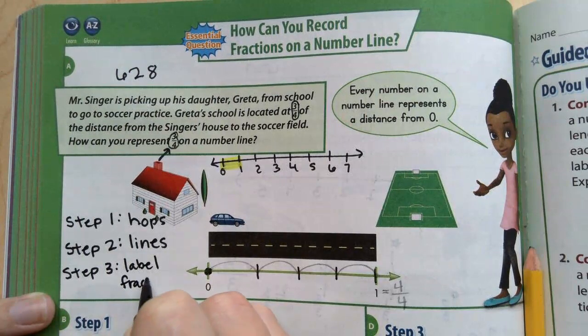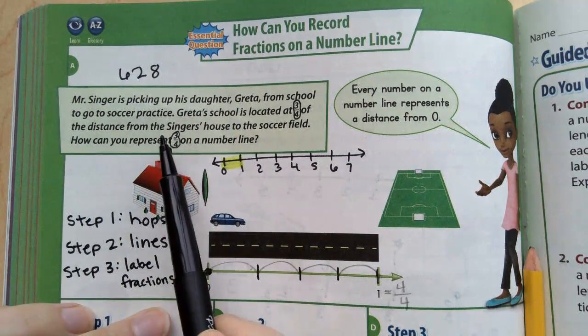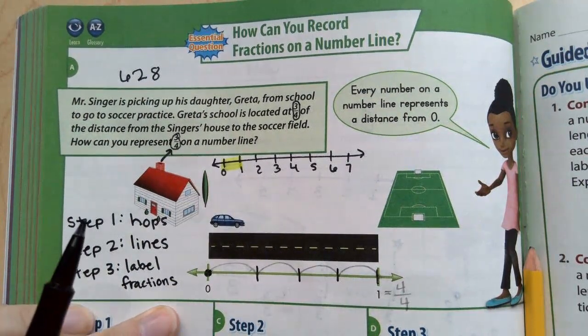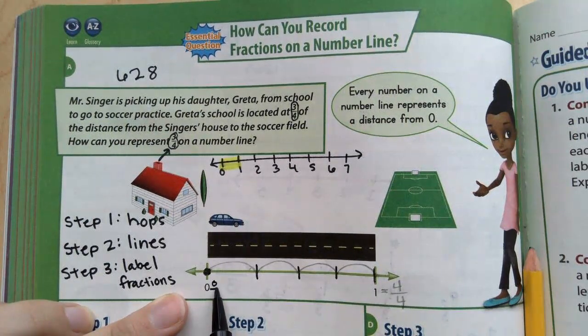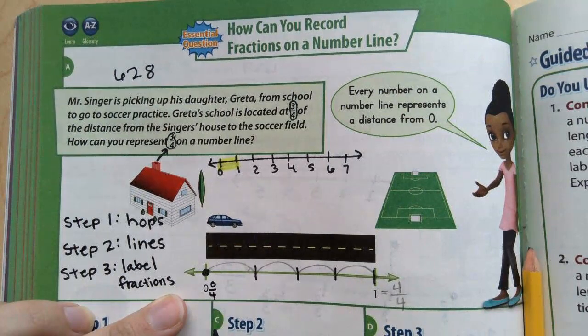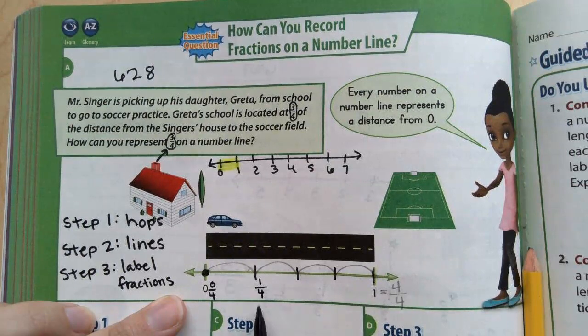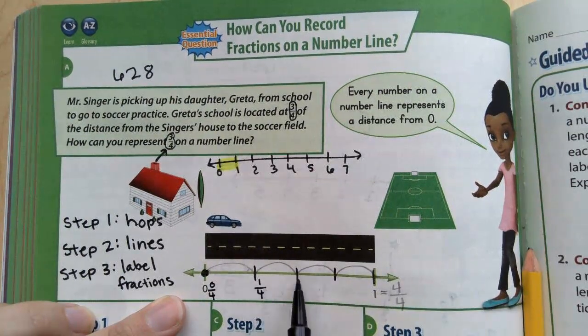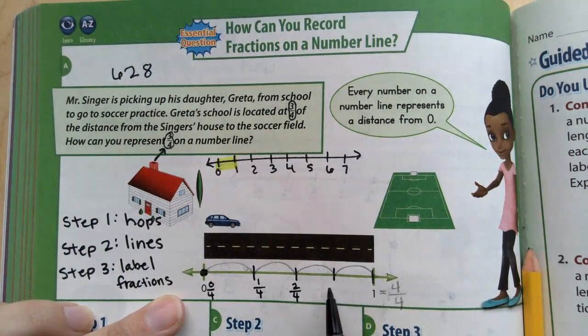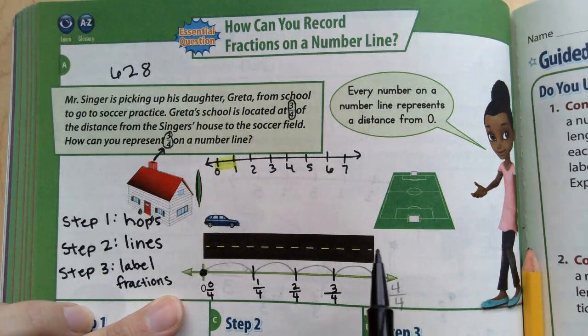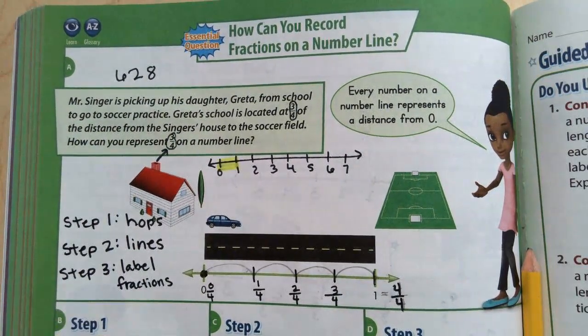Label fractions. So remember, the numerator is how many parts or how many hops. This first one, I have made 0 hops out of a total of 4 hops. Next one, I have made 1 out of the 4 hops. Next one, I have made 2 out of the 4 hops. Next one, I have made 3 out of the 4 hops. And last one, 4 out of the 4 hops. Go ahead and write that out.